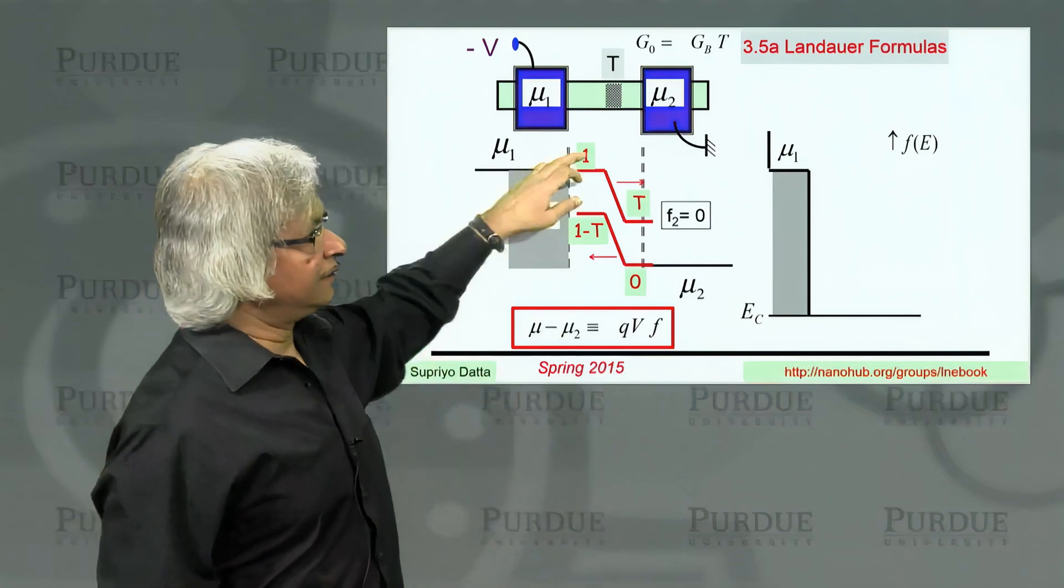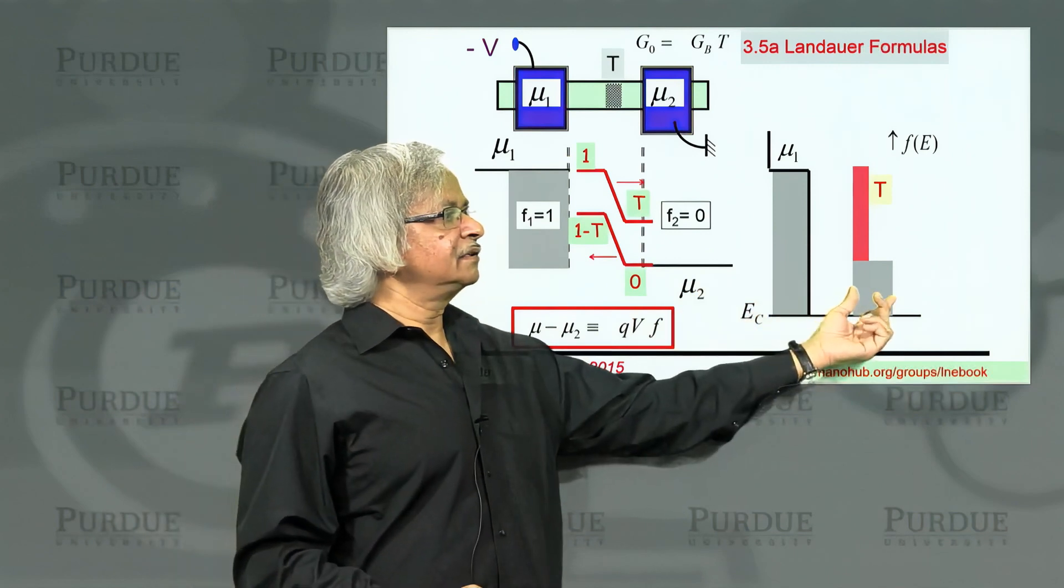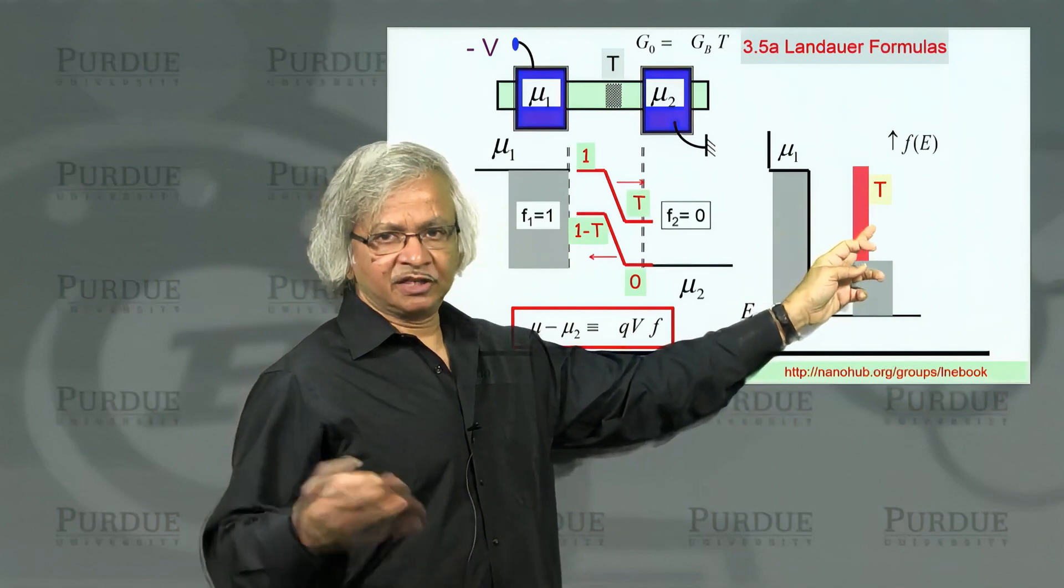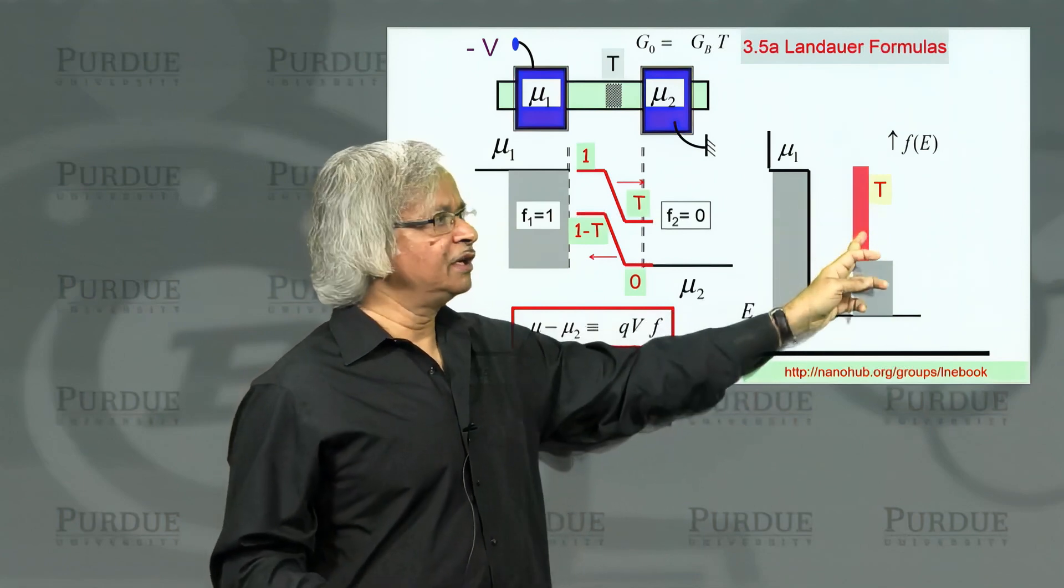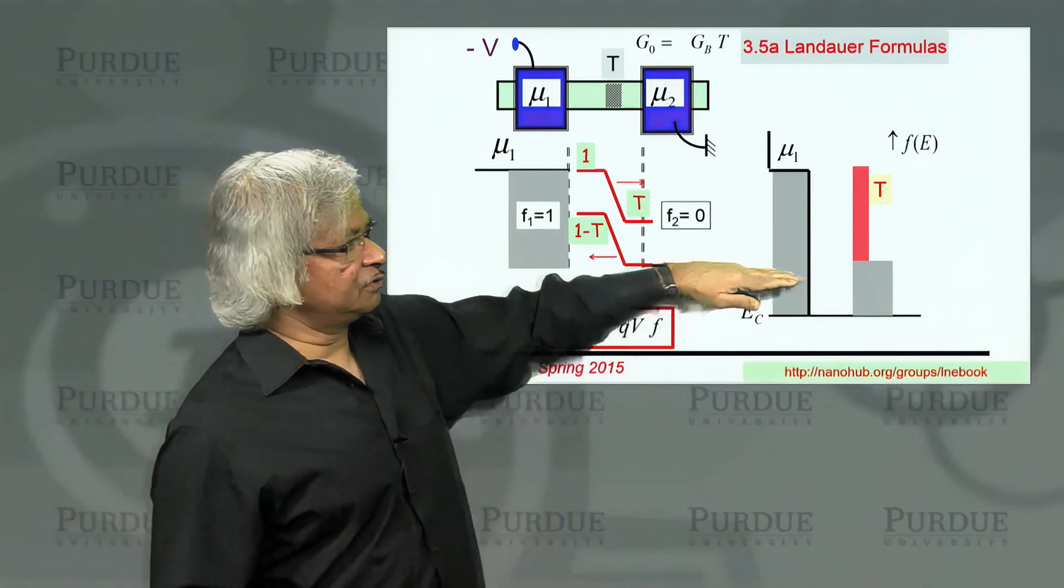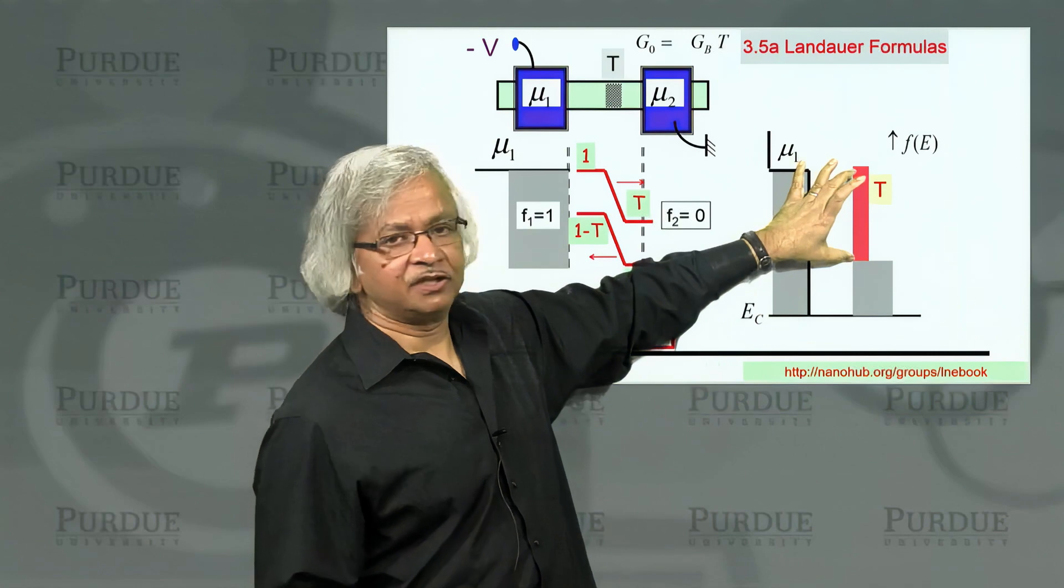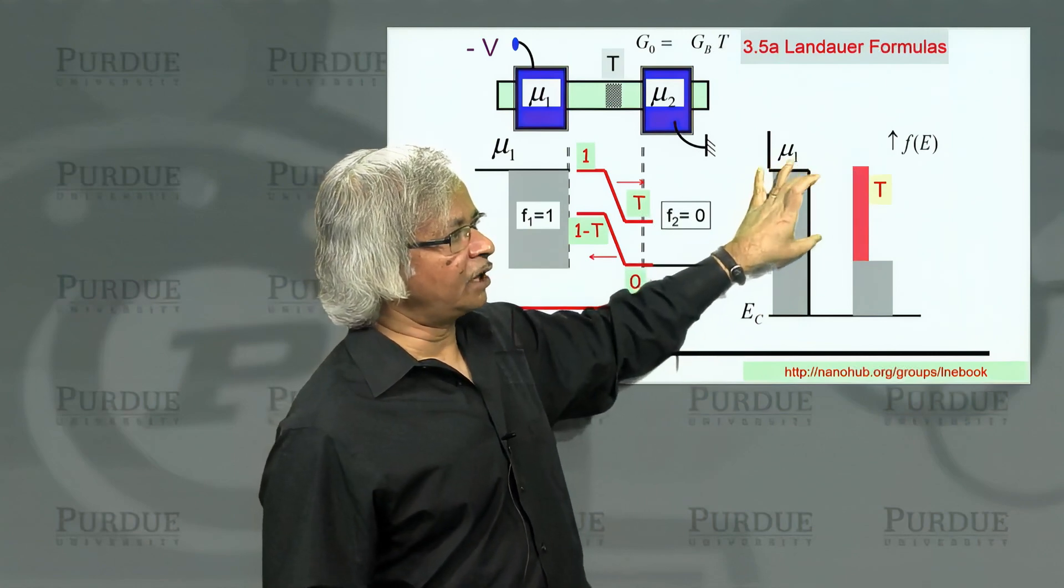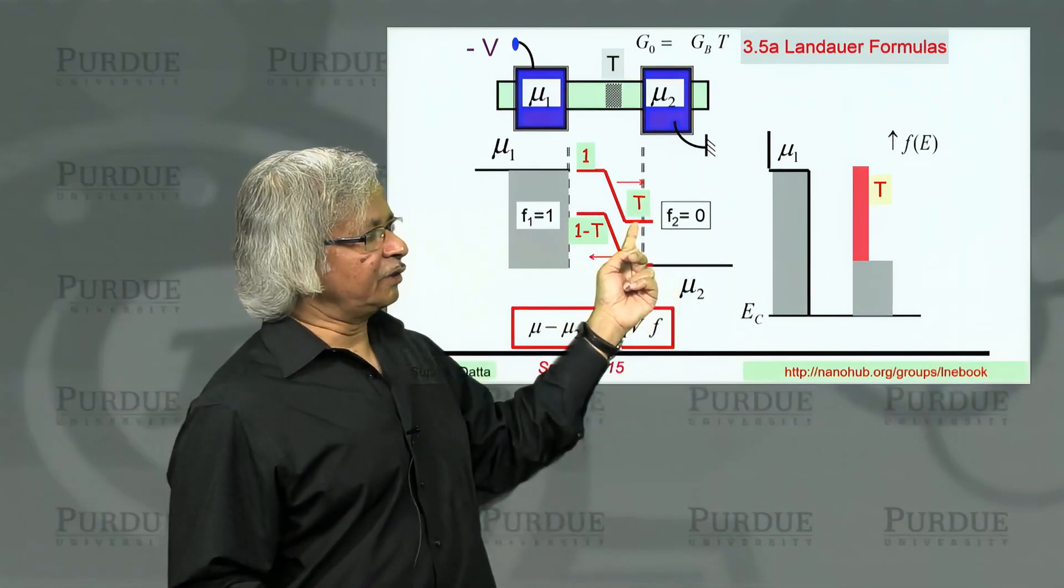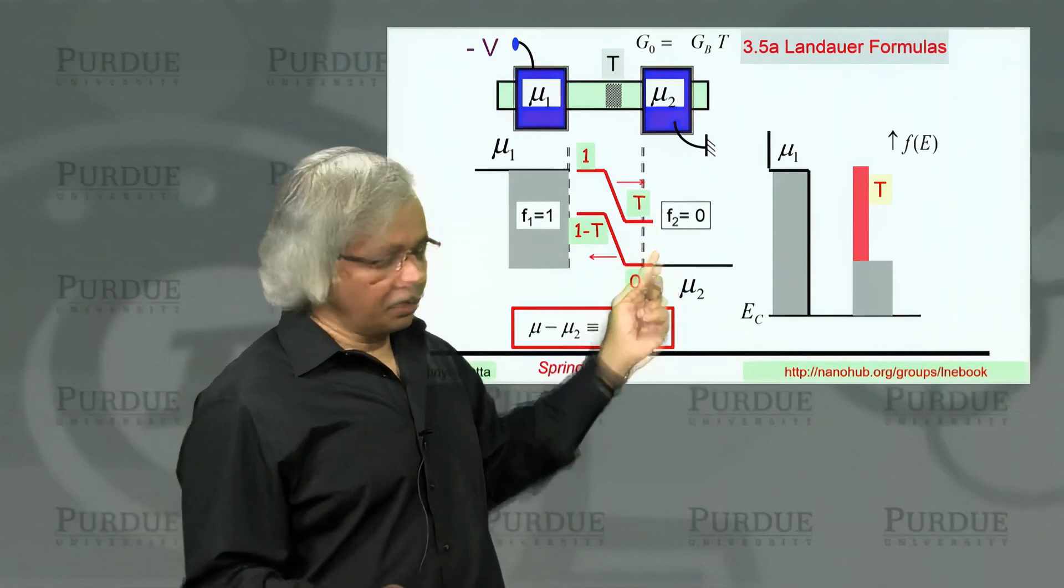You would expect that if you looked past the scatterer, the occupation instead of being 1 would be much less. If the transmission is 0.2, then the states would only be 20 percent occupied. Of course the states below mu 2 are just occupied everywhere anyway. It's in the energy range of interest the occupation would go down from 1 to T.